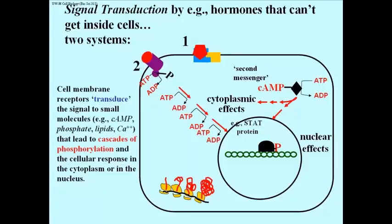So cell membrane receptors transduce an external signal into some small molecule in the cell, like cyclic AMP. General levels of phosphate can be elevated, certain lipids can be elevated, or calcium. All of these are other second messengers.